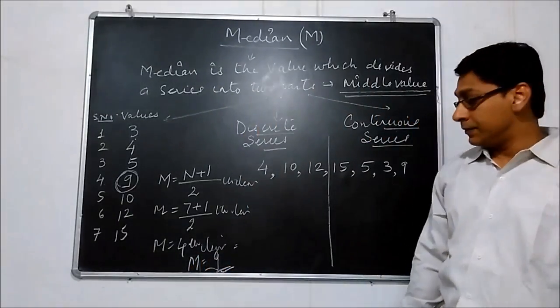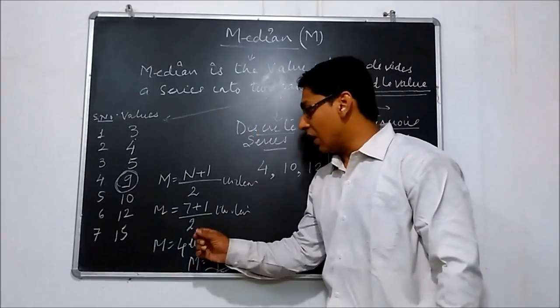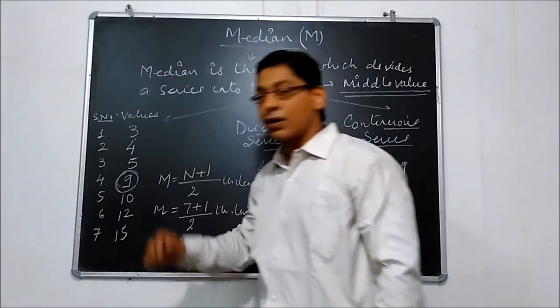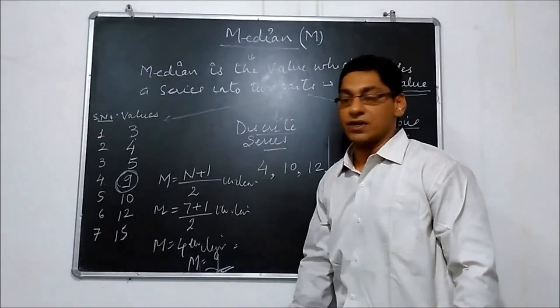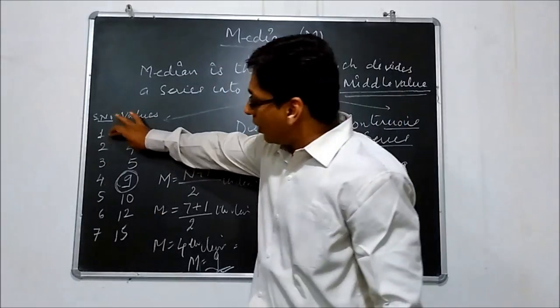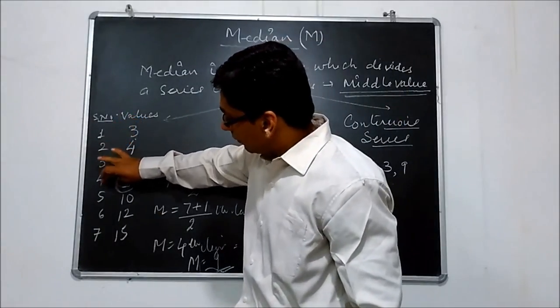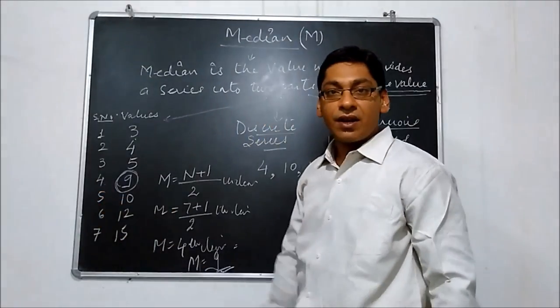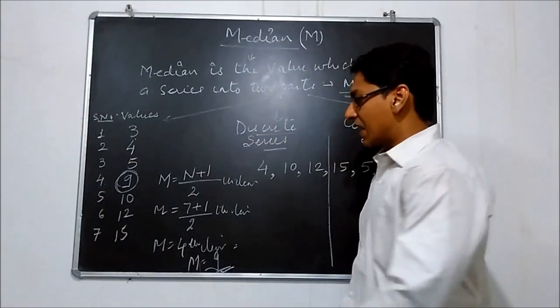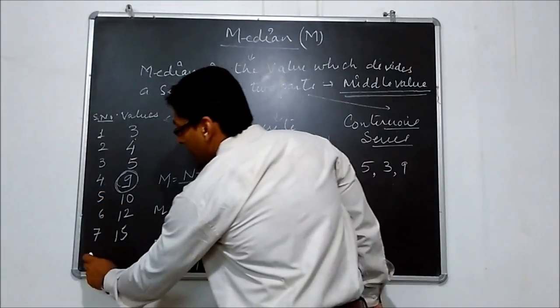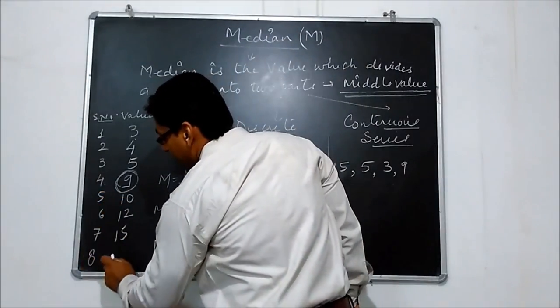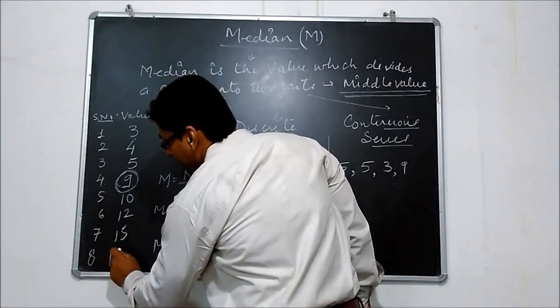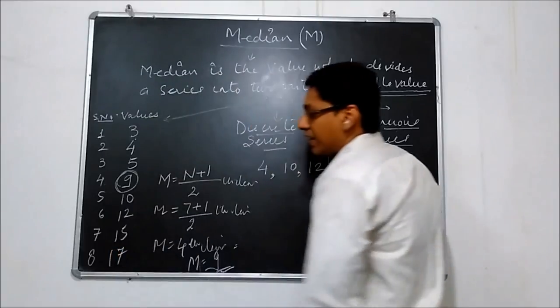Here these are odd numbers: 1, 2, 3, 4, 5, 6, 7. If I add one more number, say 17, making it 8 numbers, what effect will there be on the formula? Let us see. Now we have 8 observations.